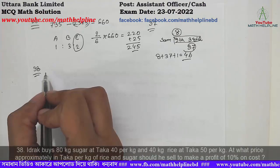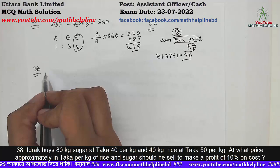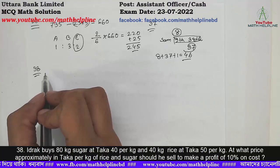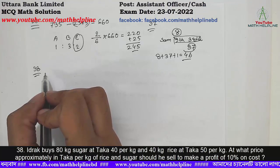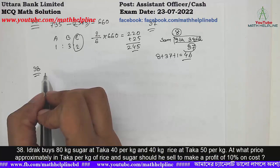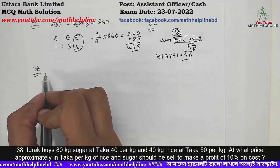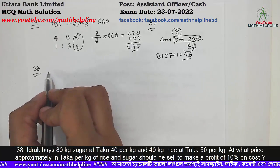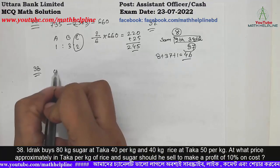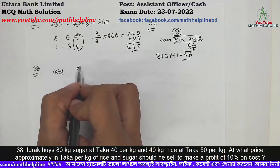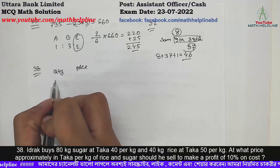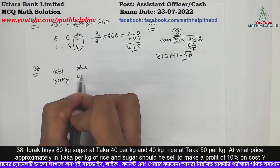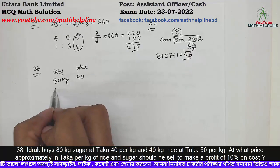Per kg of rice and sugar, what price should he sell to make a profit of 10% on cost price? If the cost price requires a 10% profit, we first calculate quantity and price. Quantity: 80 kg at 40 taka per kg. Then calculate the other quantity.